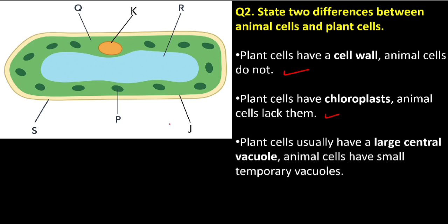Another difference is that plant cells usually have a large central vacuole. Animal cells may have small temporary vacuoles — you can see here the part labeled R is very large and centrally placed, but for animal cells the vacuoles are small and sometimes absent, which is why we say temporary vacuoles.